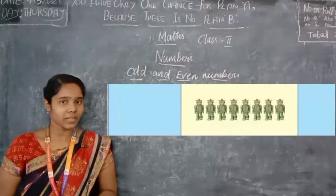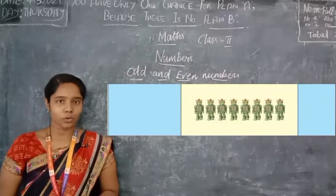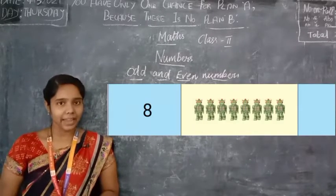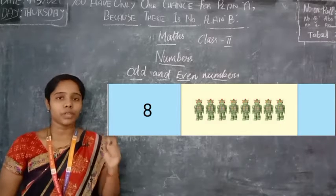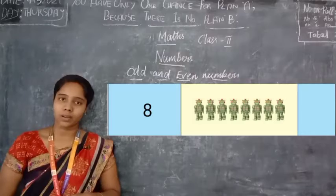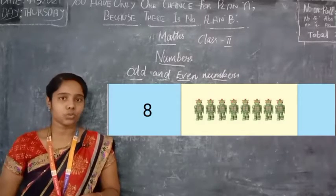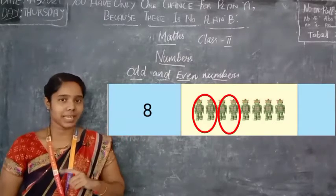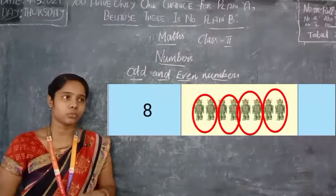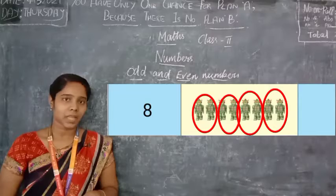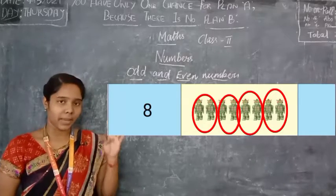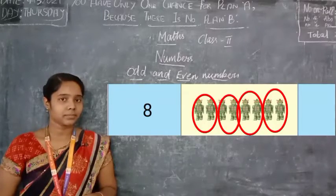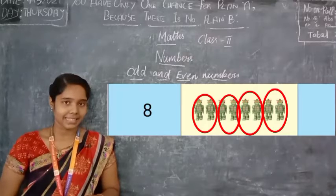Now see this picture — these are robots. How many robots are here? We have eight robots. Now we are going to check whether eight is an even or odd number by pairing them in sets of twos. First two robots — one set. Second two — one set. Third two — one set. Fourth two — one set. Do we have any remaining? No, we don't have any remaining. We were able to make four complete sets of two. So eight is an even number.